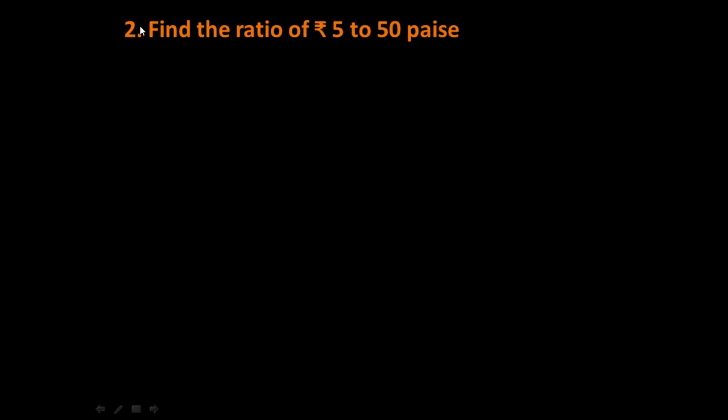Question number two: now we have to find the ratio of rupee 5 to 50 paise. Here we have two different amounts, one is in rupees and another is 50 paise, so firstly we need to make both the same. We know very well that one rupee has 100 paise in it, so for that reason 5 rupees has 500 paise in it.